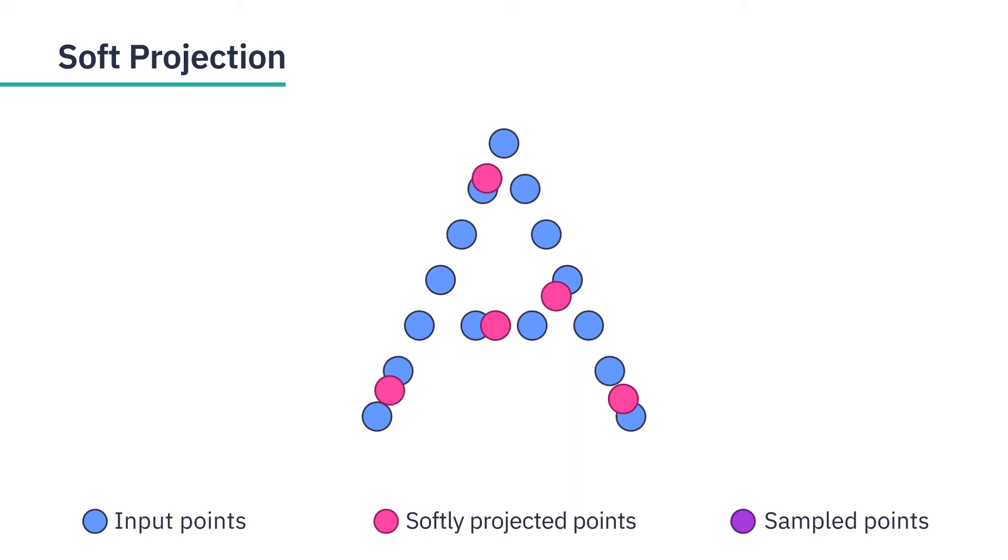The soft projection operation is introduced during training and the temperature coefficient is minimized. Thus, our method learns an optimal sampling strategy for a downstream task and outperforms other methods.